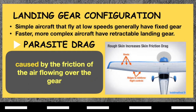The landing gear supports the aircraft during landing and while it is on the ground. Simple aircraft that fly at low speeds generally have fixed gear, meaning the gear is stationary and does not retract for flight. Faster, more complex aircraft have retractable landing gear. After takeoff, the landing gear is retracted into the fuselage or wings and out of the airstream. This is important because extended gear creates significant parasite drag which reduces performance. Parasite drag is caused by the friction of air flowing over the gear, and it increases with speed.